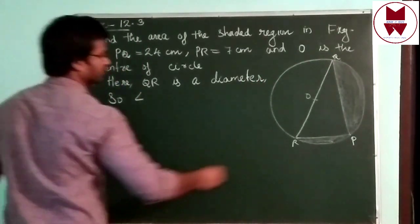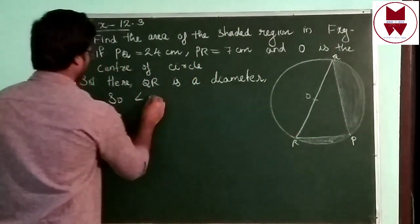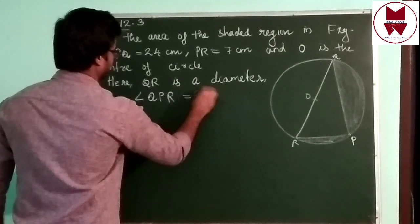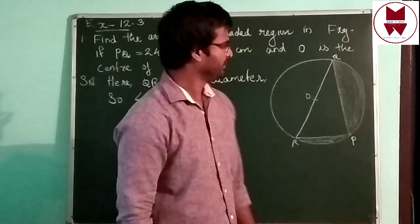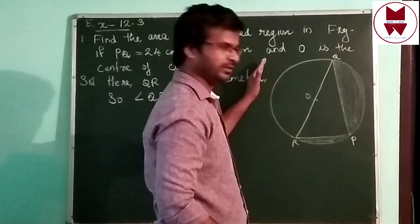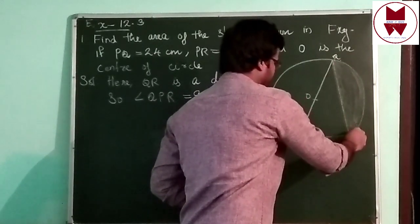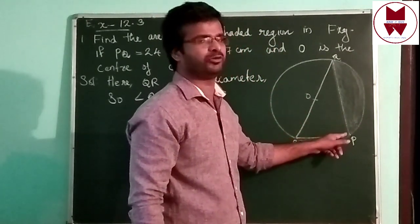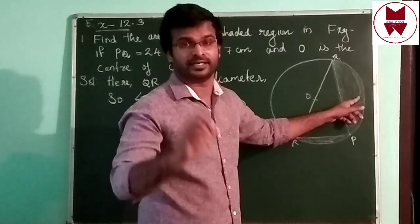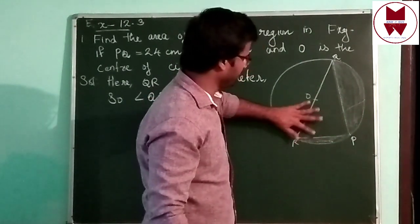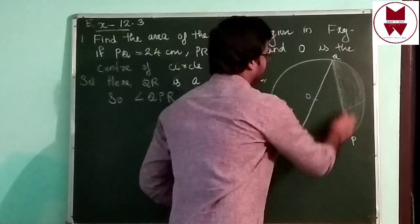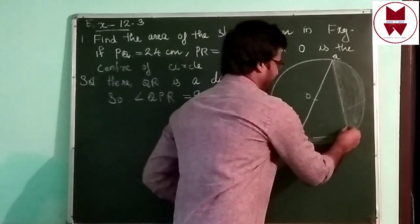Therefore angle QPR equals 90 degrees. Since QR is the diameter, this side is a semicircle and the other is also a semicircle. If you make any angle in a semicircle, that angle will always be 90 degrees — a right angle. No matter how you draw it, the angle in a semicircle is always 90 degrees. That's why angle QPR is 90 degrees.